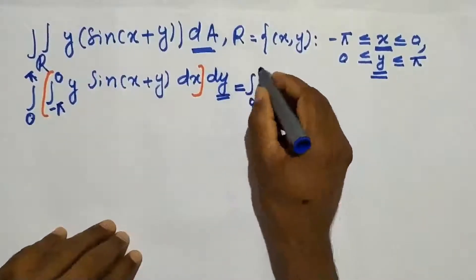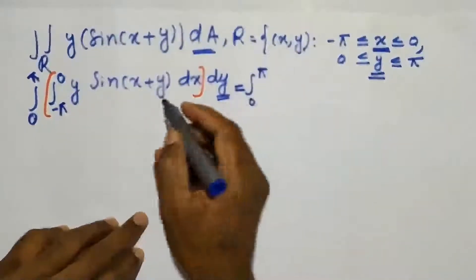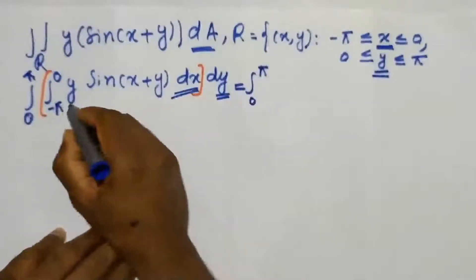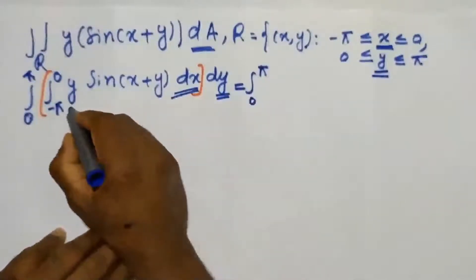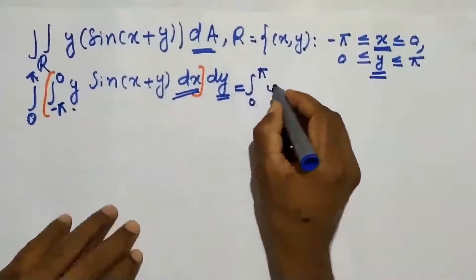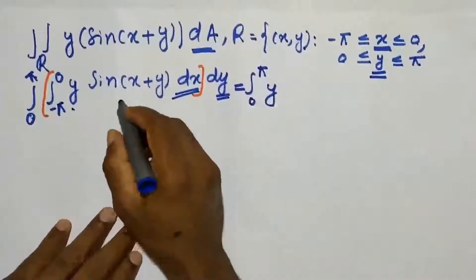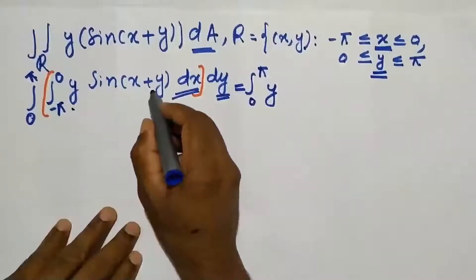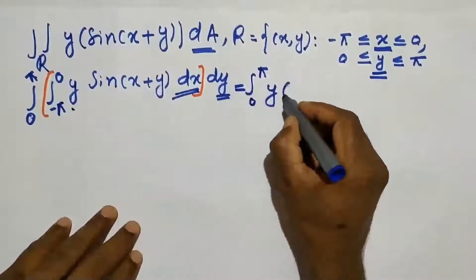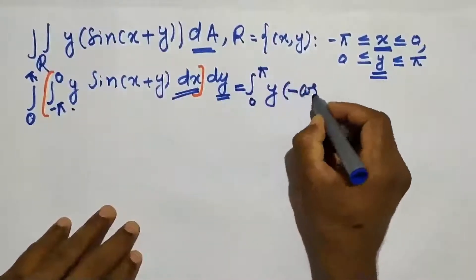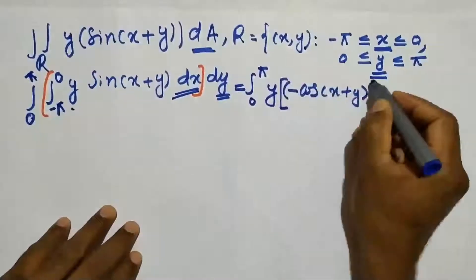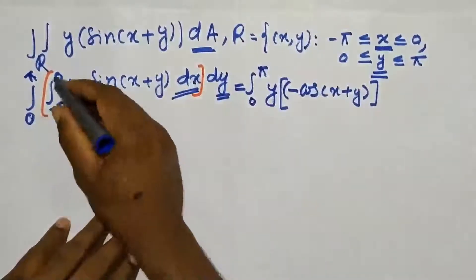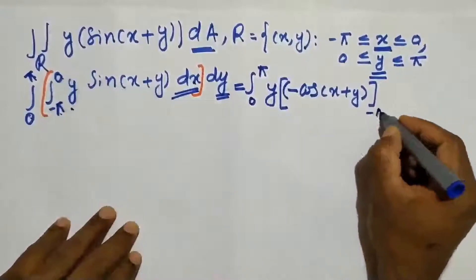Integral from 0 to pi: on integrating with respect to x, y is constant. The integral of sin(x+y) is minus cos(x+y), and the limit of x varies from minus pi to 0.